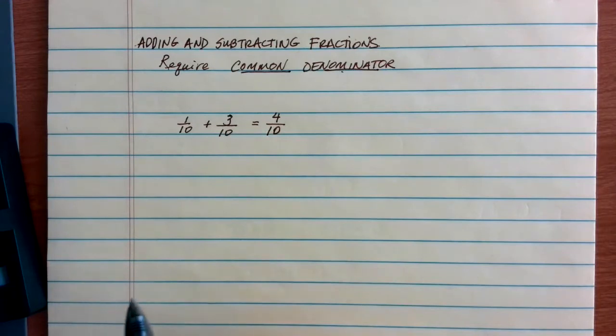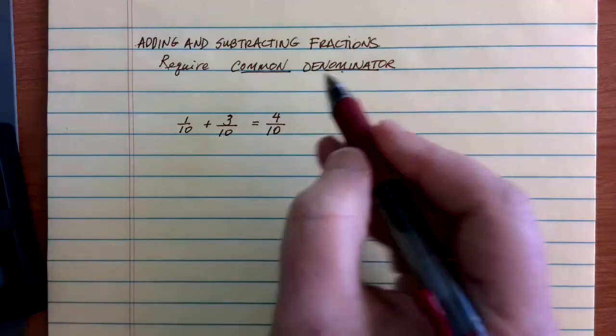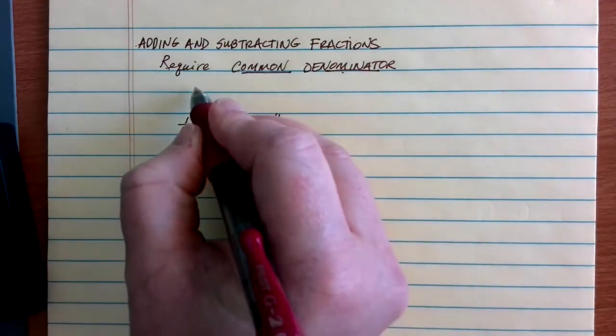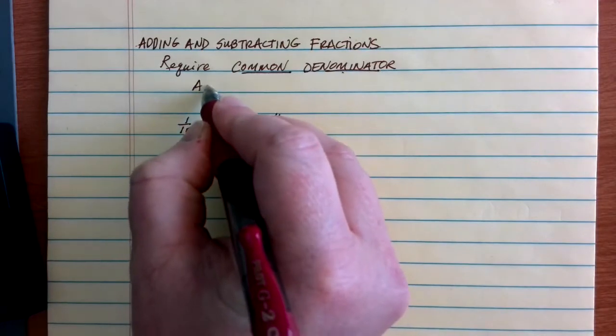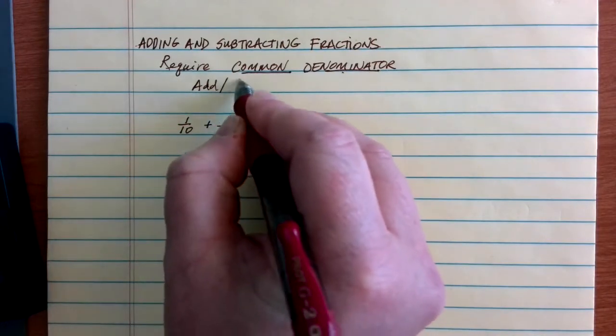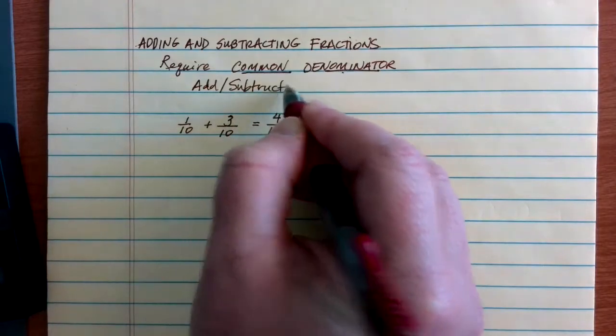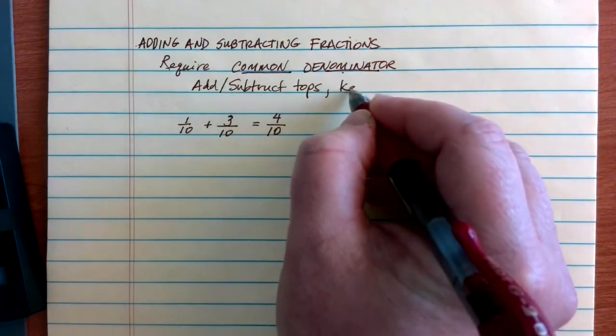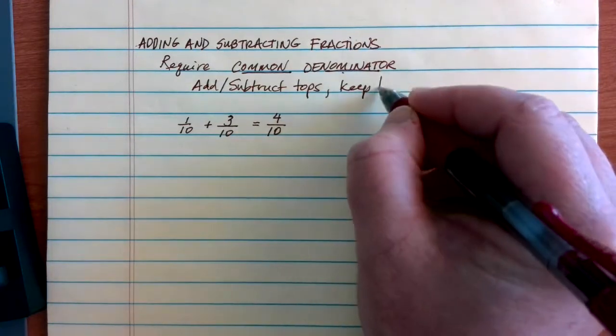So my fractions are equally sized when I'm considering these as different pieces to come together. It requires a common denominator. Once you have a common denominator, we add the tops or subtract, because this rule works for subtraction as well. Add or subtract the tops but keep that denominator the same.